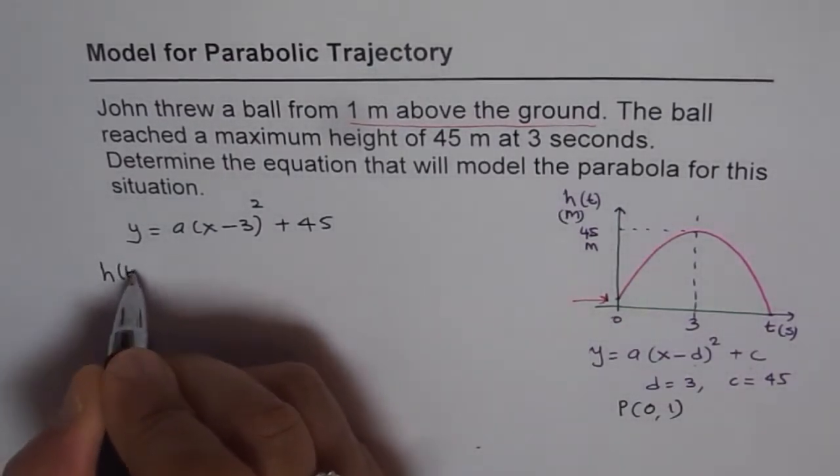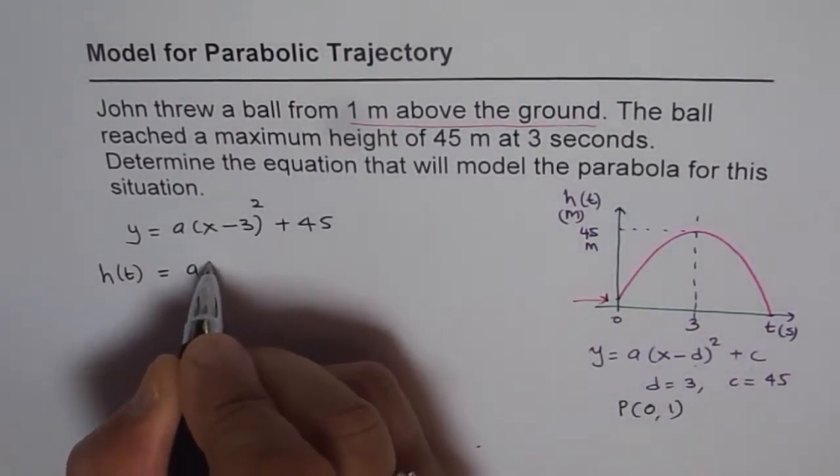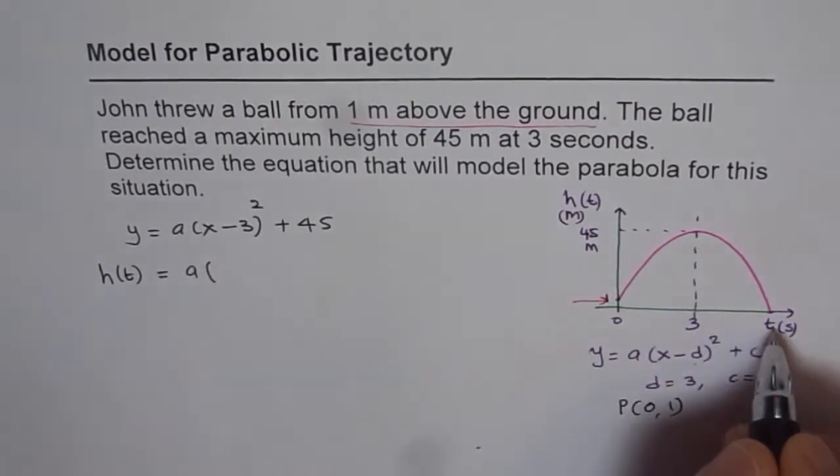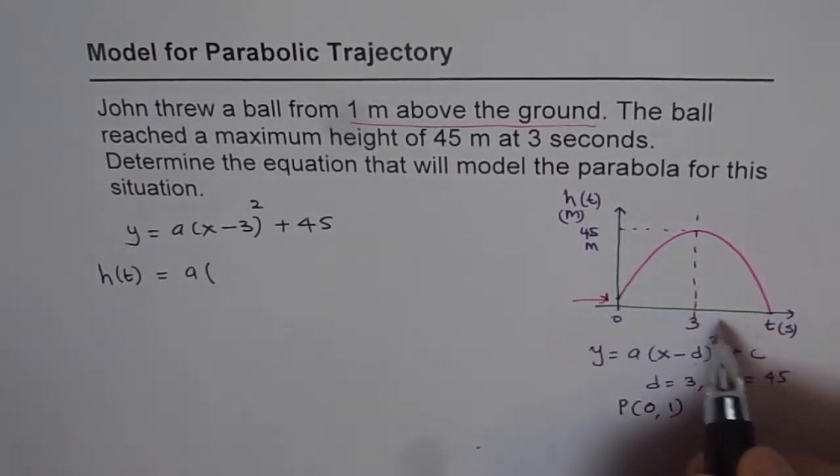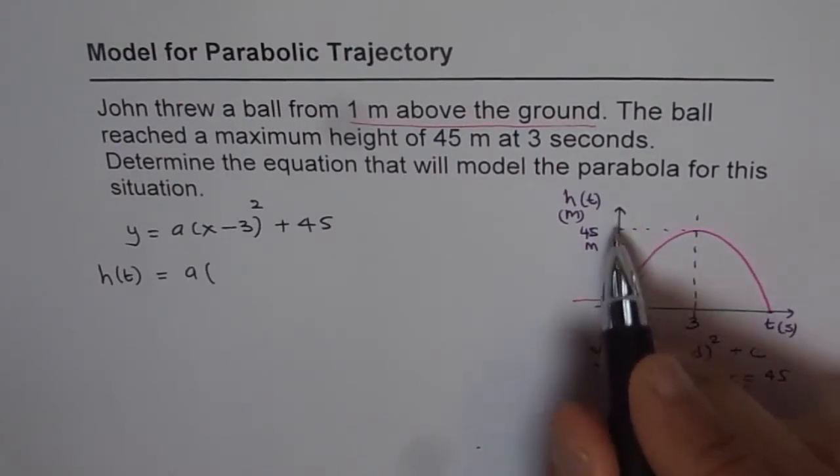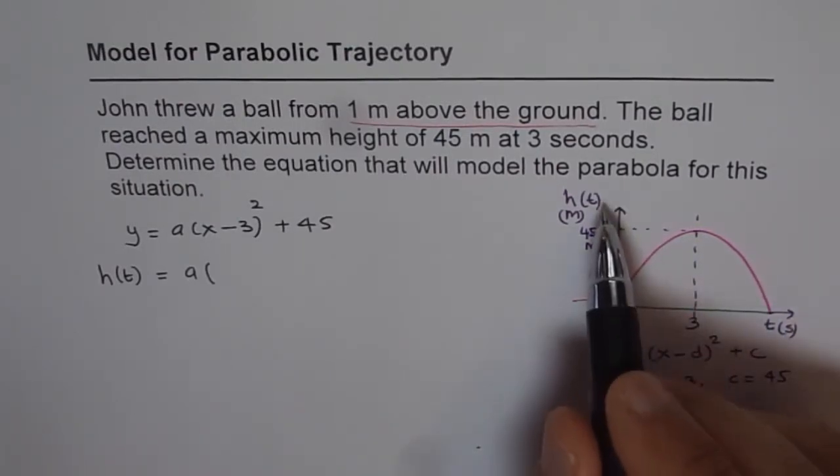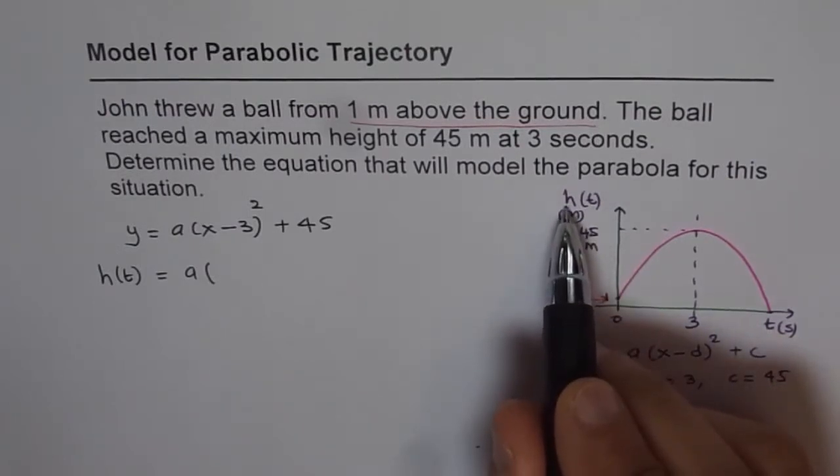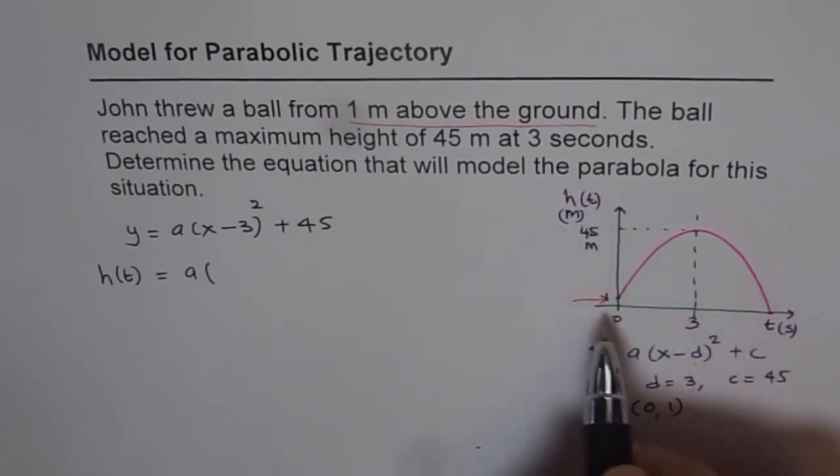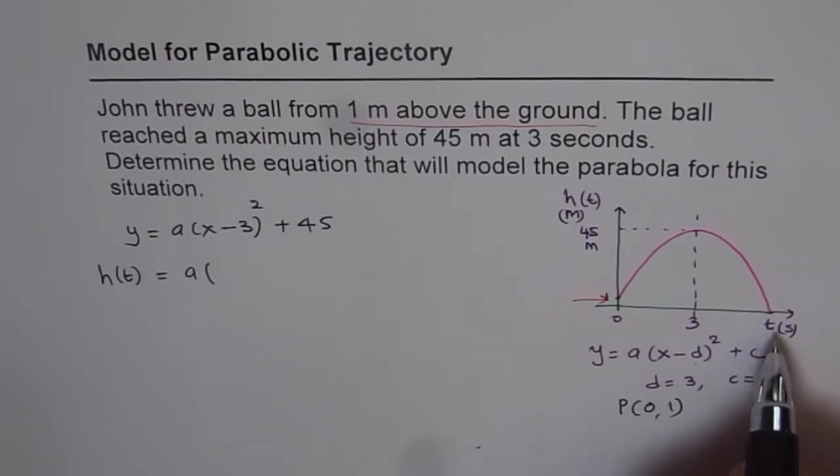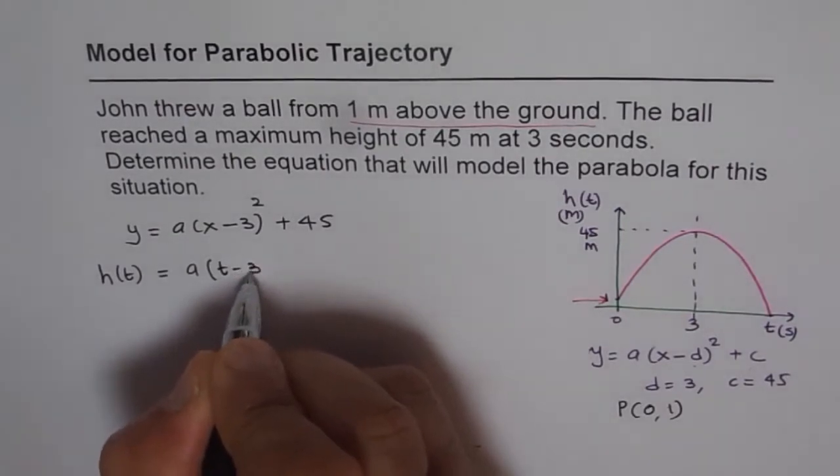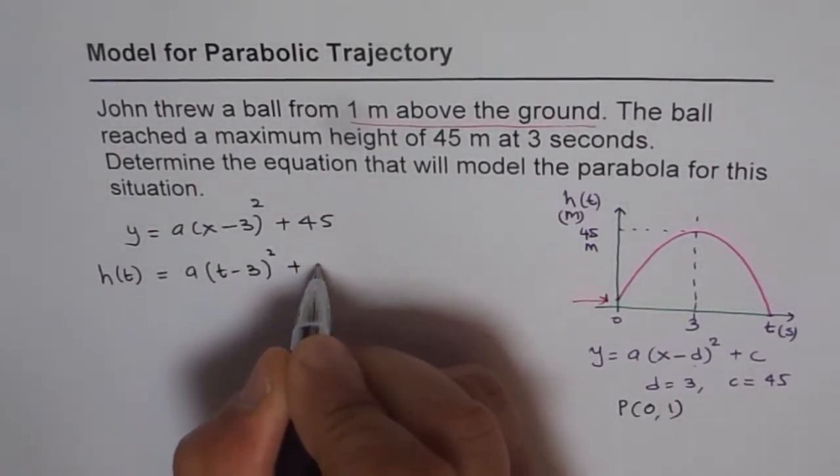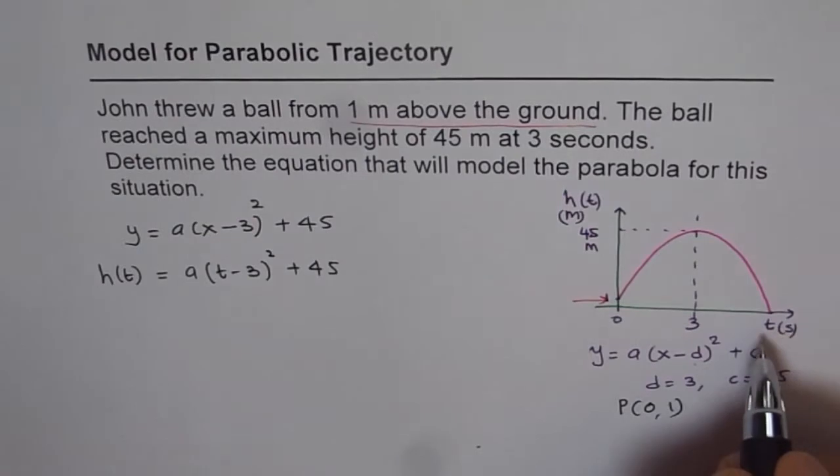So basically we get a function which is h(t). So let me write this function as h(t) equals a times... Instead of x I will write t as my time because I am now representing this parabola shown on the graph. So my y is actually function of time and which is height with respect to time. And on the x-axis I have taken t as time in seconds. So that is how I am defining my variables. So my variables are (t minus 3) squared plus 45. So I have defined variables as time in seconds as given in the question and height as a function of time. So that is what I get.